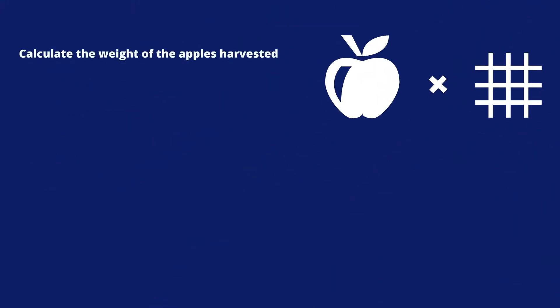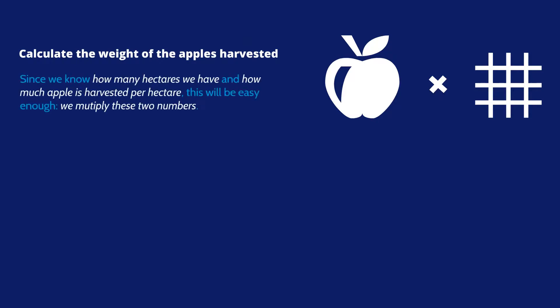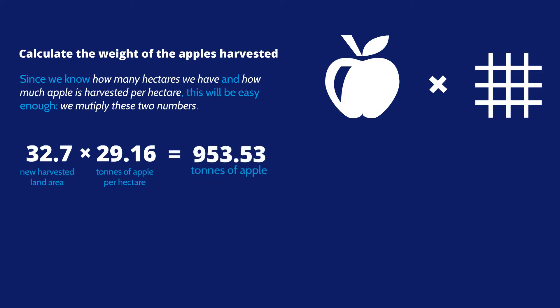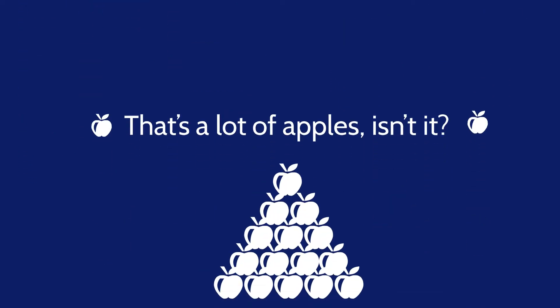There is only one thing left to do: calculate the weight of the apples harvested. Since we know how many hectares we have and how much apple is harvested per hectare, we multiply these two numbers. 32.7 thousand multiplied by 29.16 tonnes equals 953.53 thousand tonnes. That's a lot of apples!